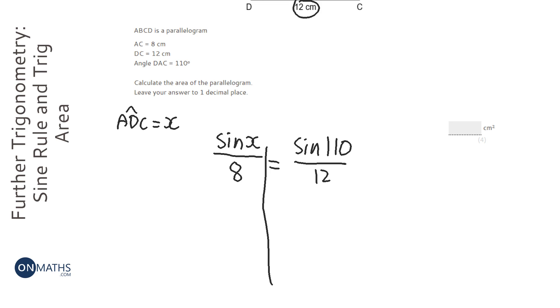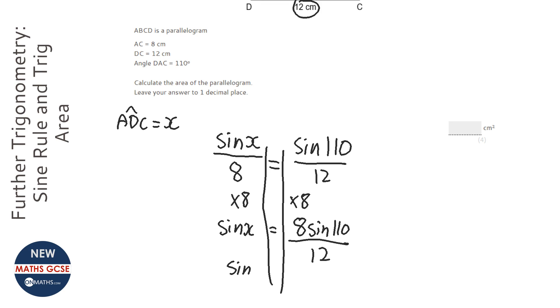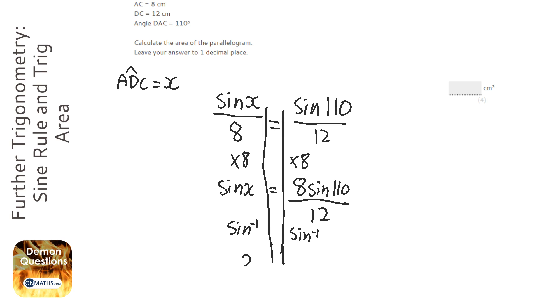First thing I'm going to do is just times both sides by 8. So it's going to be sine X equals 8 sine 110 over 12. And then what I'm going to do is inverse sine both sides. So X is going to be the inverse sine of 8 sine 110 over 12.